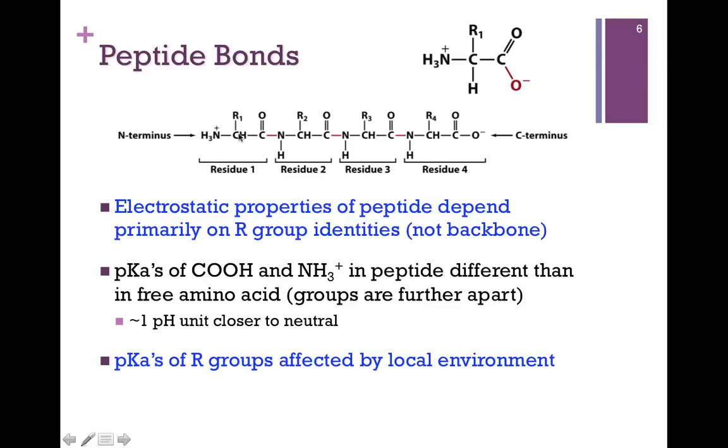However, in the peptide, notice that they're widely separated from each other, so they have less of an impact on each other. This means the carboxyl group is less acidic and the amine group is less basic. This means that they're a pH unit closer to neutral. And the point here is that within a peptide or protein, those PK values could be different than they are in the free amino acid.